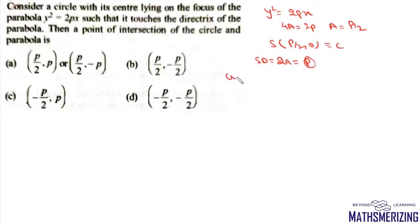The equation of this circle will be (x - p/2)² + y² with radius p, so it will be p². The equation becomes x² - px + y² with p²/4, minus p², so there will be -3p²/4 = 0.